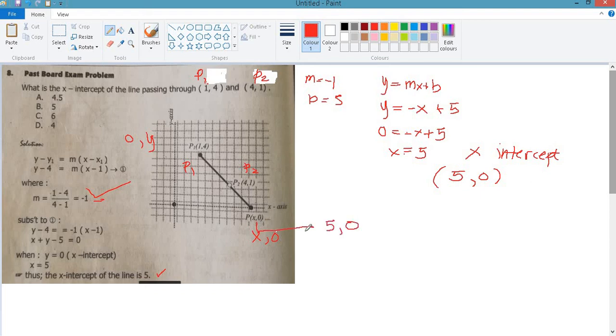This is the x-intercept, 5,0. The answer is B. You have a computation here. You can solve this using this method. Just take note that point 1 is 1,4, this is x1, y1, then point 2 is 4,1, this will be x2, y2. You can use this solution.